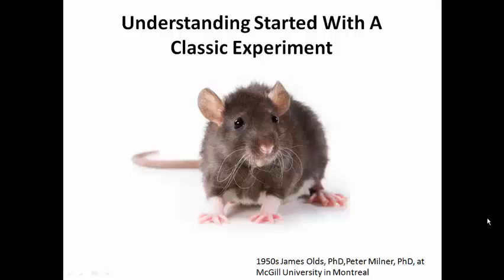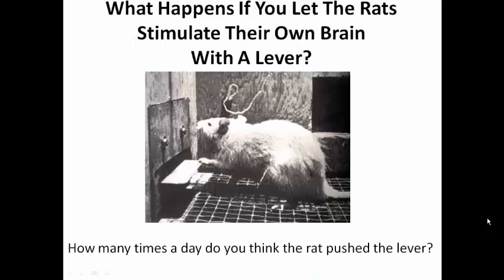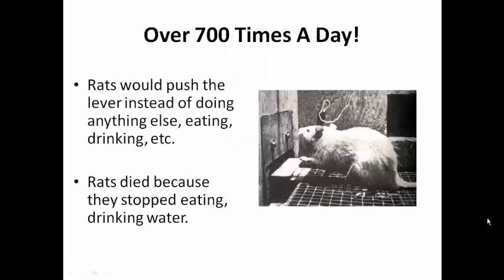What happens a lot in science is that you look for one thing and you discover something else. What they discovered was, when they were stimulating different parts of the rat's brain, they found a part of the brain that the rat absolutely loved — it made the rat feel an extreme sense of pleasure. So they put a twist on the experiment: what if we don't stimulate the rat's brain, but we let the rat stimulate its own brain? They set up a device with a lever in the cage, and the rat learned it could press the lever to deliver a little electrical stimulation to basically the pleasure center of its brain. How many times a day do you think the rat pressed the lever? 700 times a day — basically nonstop all day long. The rats pressed the lever so many times they stopped drinking, they stopped eating, they stopped sleeping. The rats died because all they did was press the lever.